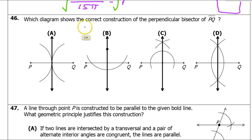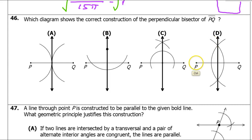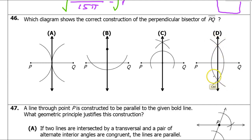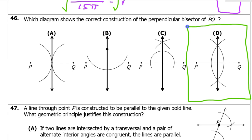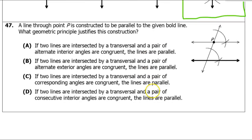Problem 46: which diagram shows the correct construction of the perpendicular bisector of PQ? For the perpendicular bisector, you place the compass at P, go more than halfway and draw an arc, then place the compass at Q, go more than halfway, and draw another arc. Where they intersect is the perpendicular bisector, as shown in the correct picture.